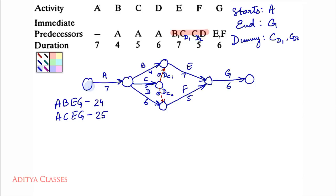Then we have another path A, C, dummy, F and G — which we call A, C, F, G. Duration: 7, 5 — giving 12, and 5 — giving 17, and 6 — giving 23.